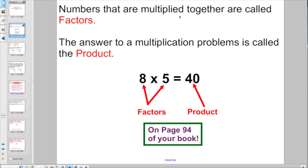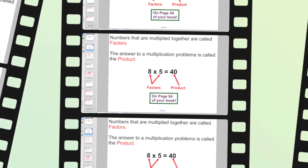So let's start with a little bit of review. Numbers that are multiplied together are called factors. We learned that back in lesson 15. The answer to a multiplication problem is called the product. If you think 8 times 5 equals 40, 8 and 5 are truly factors. But that's not really how we're going to utilize them.